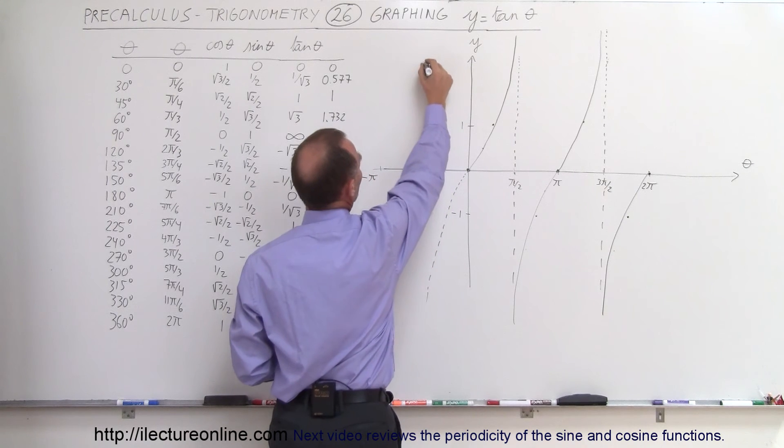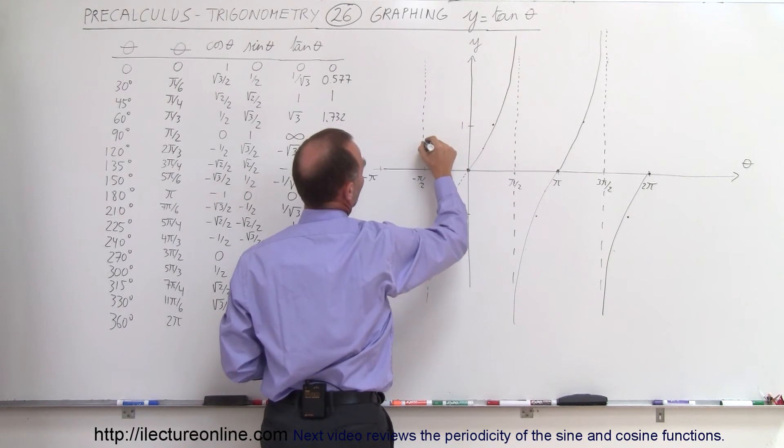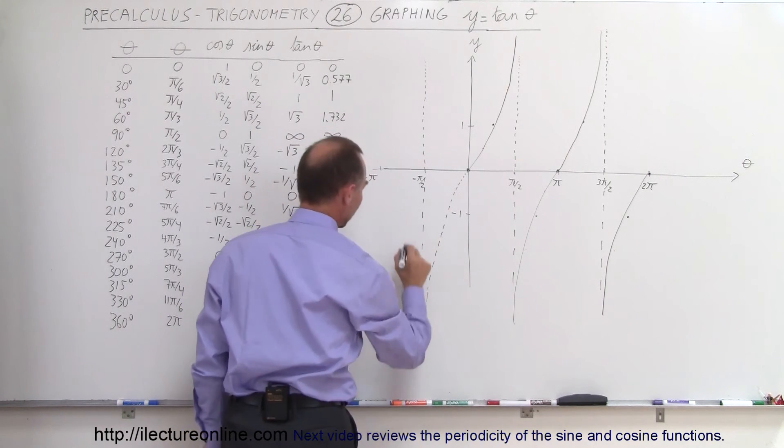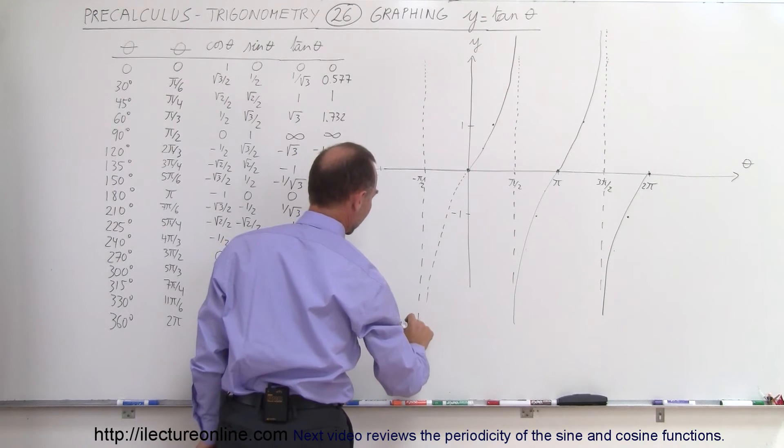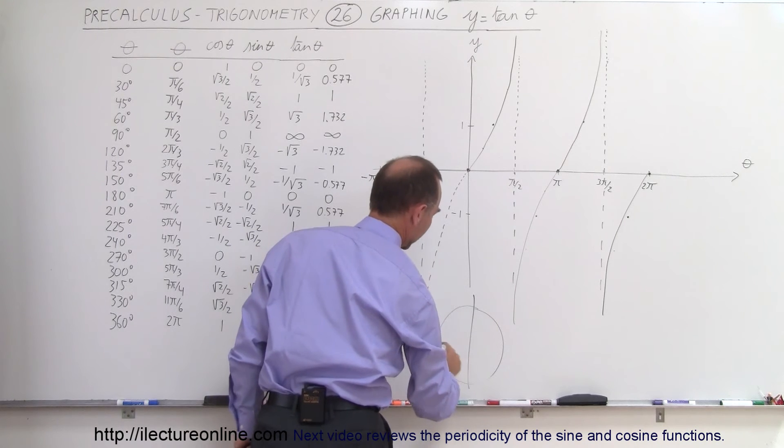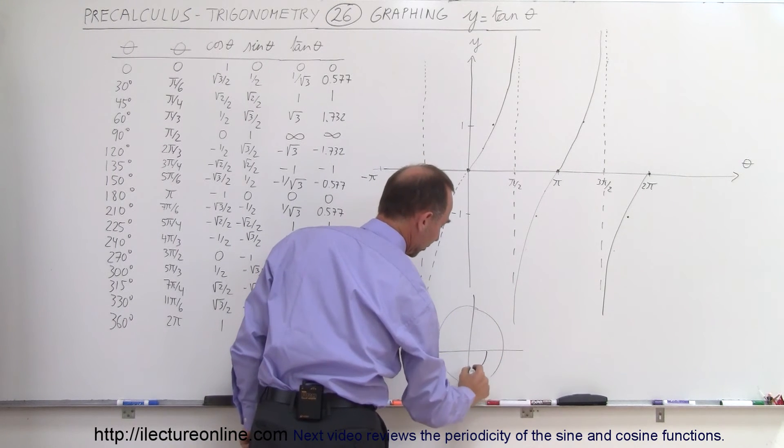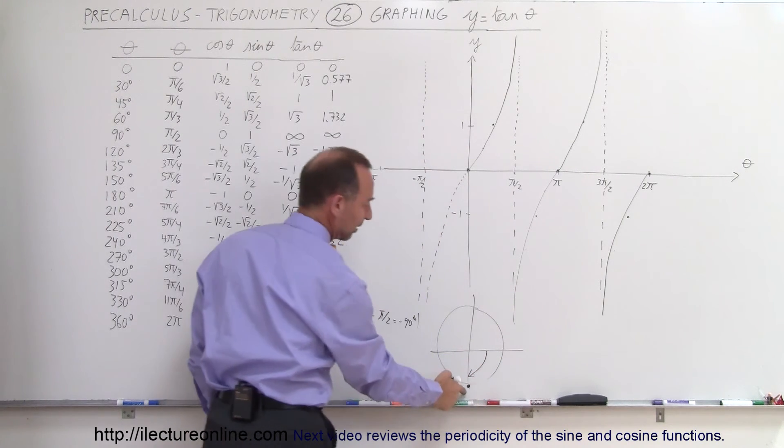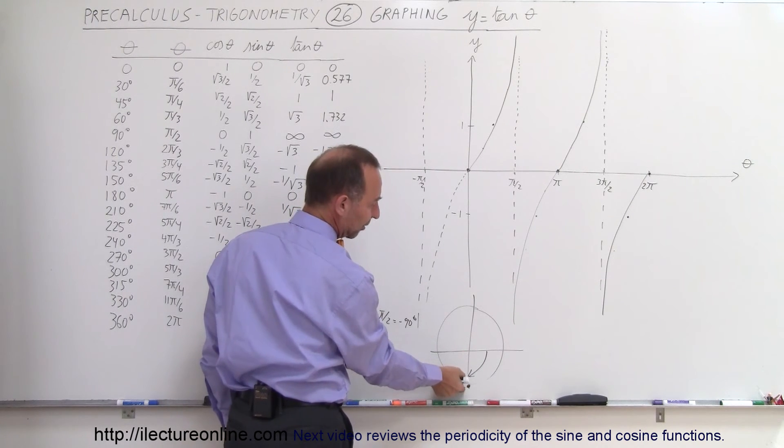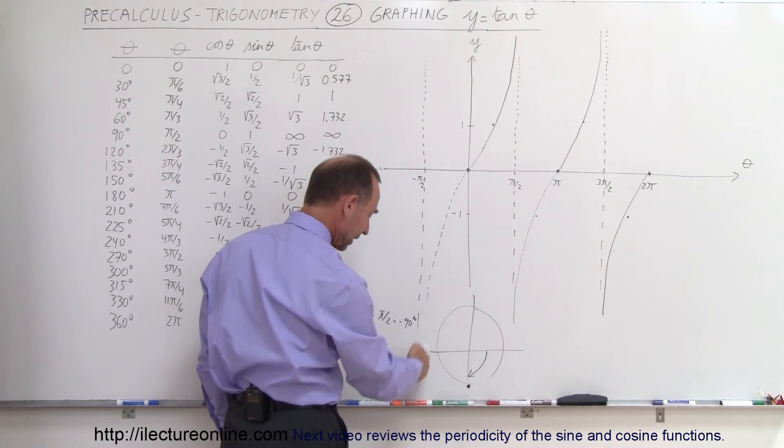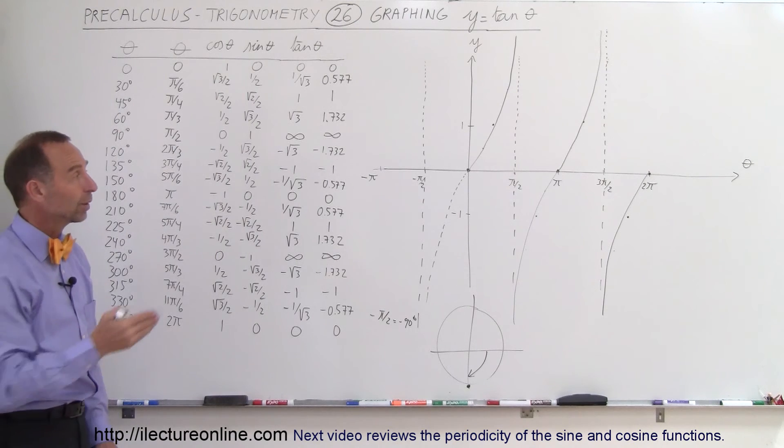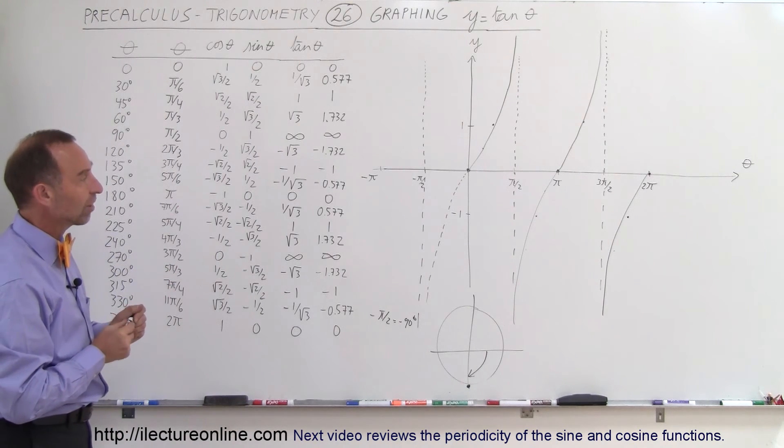And now we'll have another asymptote at minus pi over 2. And let's check that just for a moment. So let's say we have minus pi over 2, which is equal to minus 90 degrees. At minus 90 degrees, which is down here, you can see that the cosine is 0 and the sine is negative 1. And so negative 1 divided by 0 gives me negative infinity, which is way down here again. So yes indeed, we expect this to go back down to negative infinity like that. So that's what the tangent function looks like when we graph it.